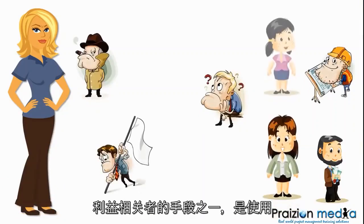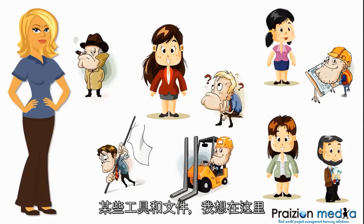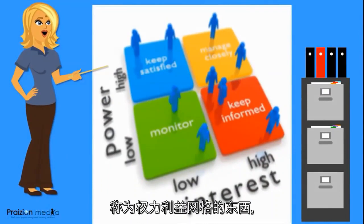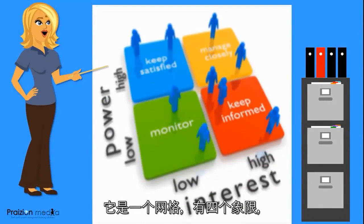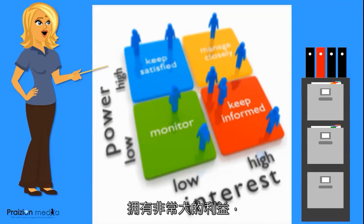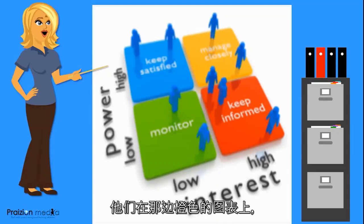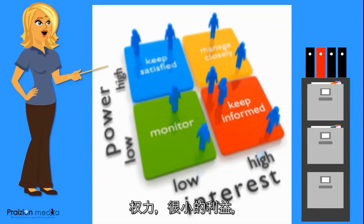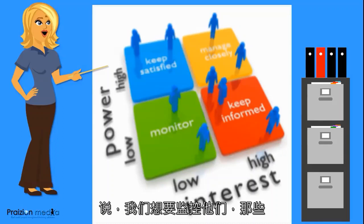Now one of the ways we get a handle on these stakeholders is by using certain tools and documents. One of the ones I want to point out here is something called a power interest grid. It's a grid and it's got four quadrants. We have those stakeholders who have a very high level of power and a very high level of interest — those we say we should manage closely, those are on the orange pod there. And those who have a high level of power but a low level of interest, we want to keep them satisfied. And those that have a low level of power and a low level of interest, they're on the green pod there, and we say we want to monitor them.